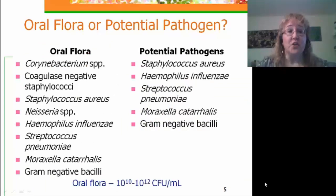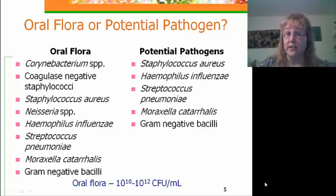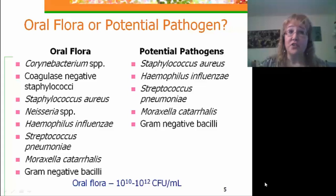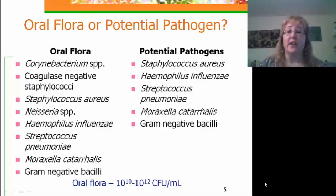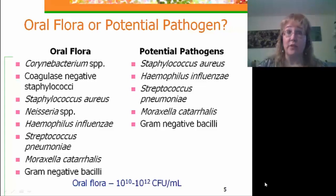One of the most difficult things in trying to interpret lower respiratory tract cultures is the concept of whether an organism is just part of the resident oral flora or a potential pathogen. There are many organisms considered potential pathogens that are also part of the resident oral flora, including Staph aureus, Haemophilus influenzae, Streptococcus pneumoniae, Moraxella catarrhalis, and a wide variety of gram-negative bacilli. The oral flora can reach concentrations anywhere from 10 to the 10th to 10 to the 12th organisms per ml.